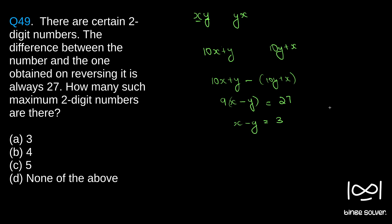Now we list the possible combinations where x minus y equals 3. The combination 9 and 6 satisfies this — so the numbers are 96 and 69. Similarly, 8 and 5 gives us 85 and 58. Then 7 and 4 gives us 74 and 47.